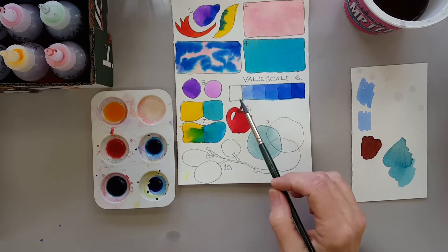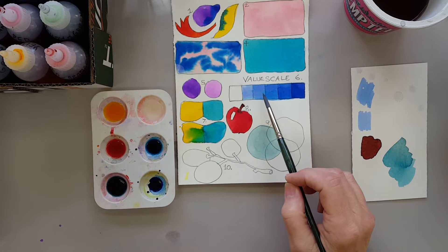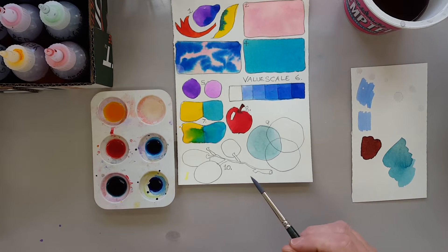We did that here for the value scale, and each subsequent glazing of the same color just made it darker and darker. Here we're going to try it with different colors and see what happens when we layer two different colors together.